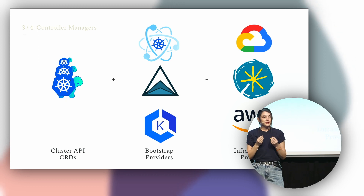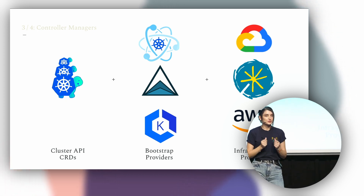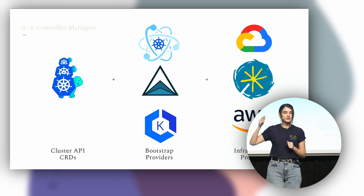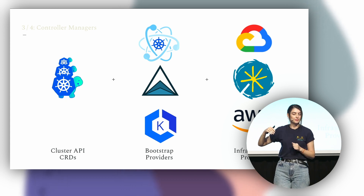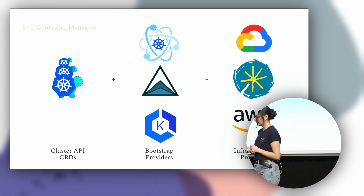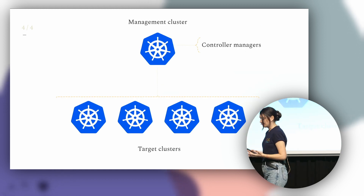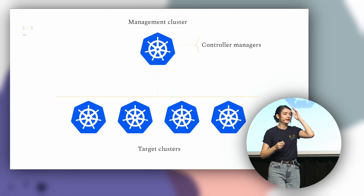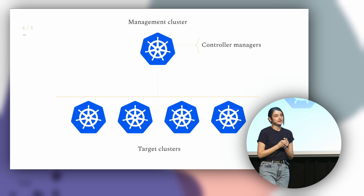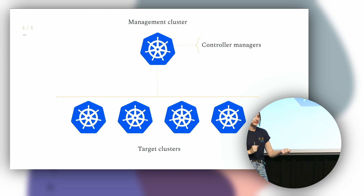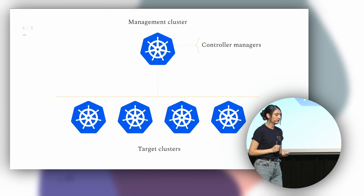The third component required is an infrastructure provider. This is the component that talks with cloud provider APIs and provisions resources such as instances, subnets, VPCs, security groups — you name it. If you want to deploy infrastructure to multiple clusters, you will require a controller for each of them — a one-to-many relationship. Once you have all of these dependencies installed, you'll be able to provision the target clusters. These are the clusters you deliver to your application teams, who can deploy their products on top of them.